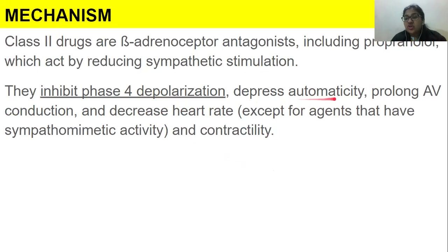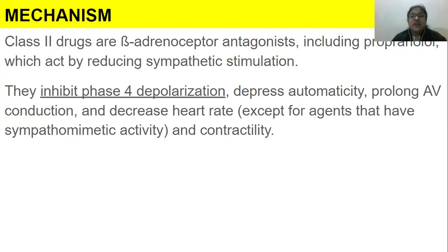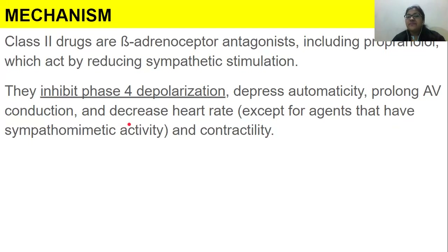Depressing automaticity means that the heart does not need a specific set of instructions from us in order to beat — it does so on its own. When we say depress automaticity, it means the heart is sending fewer electrical signals. This is why AV conduction is prolonged, and ultimately the heart will beat less — except for agents that also have some beta-mimetic activity — and contractility is reduced.